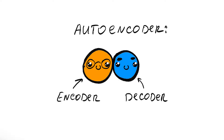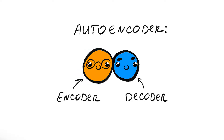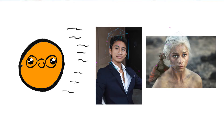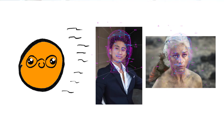An autoencoder has two parts you'll need to know: the encoder and the decoder. The encoder part of the autoencoder is used to discover the latent features of both your face and the face of the person that you want to face swap or make a deepfake with.